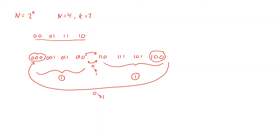This process can be repeated for larger values of k. For k equals 4, we write the sequence, mirror it, add a zero prefix to the first half, and a one prefix to the second half — and we again get a valid gray coding. This works whenever n equals 2 to the k for some integer k.